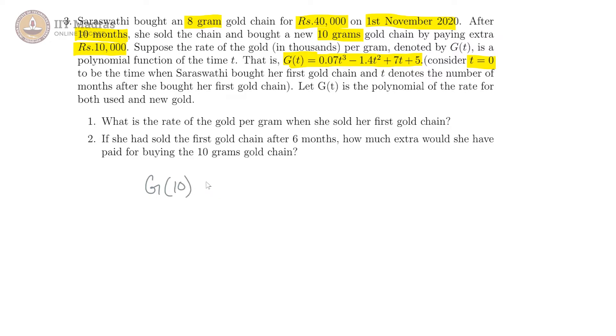That means we are looking for g of 10, and that gives us 0.07 into 1000 minus 1.4 into 100 plus 7 into 10 plus 5. And this is 70 minus 140 plus 70 plus 5.